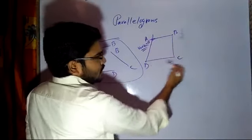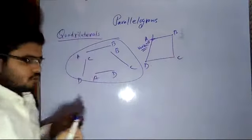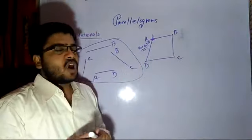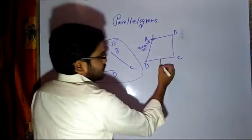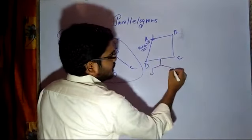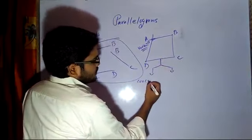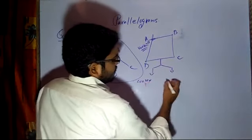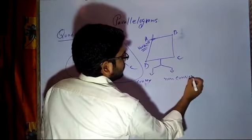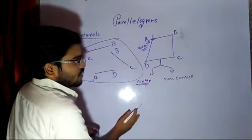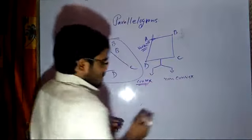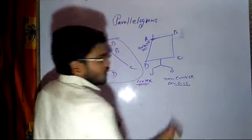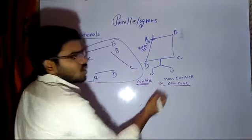All of you are now clear about quadrilaterals — what is the definition of a quadrilateral and what is a vertex. Now, second thing: types of quadrilateral. How many types are there? First is convex, and second is non-convex or concave quadrilateral. They are the same.